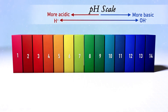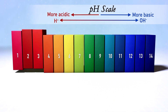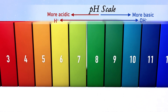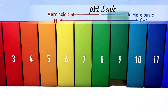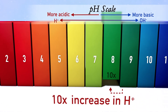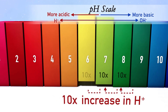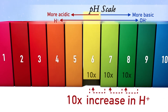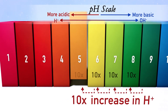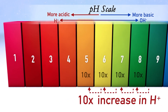Each whole number on the pH scale represents an exponential difference in value. This means that each whole number decrease in pH represents a 10 times increase in hydrogen ion concentration.